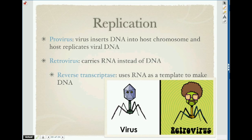So how does a virus reproduce? A provirus will insert its DNA into the host chromosome and the host just replicates that DNA. The host thinks that the virus DNA is the host DNA and it just takes it along and replicates it just like its own DNA. A retrovirus will carry RNA instead of DNA — so instead of a little ball of DNA, it's a little ball of RNA. Then within the cell, the cell will use reverse transcriptase to make that RNA as a template to make DNA, and then it will start reproducing the DNA. So it's just like an extra step.